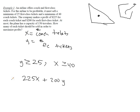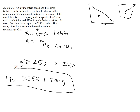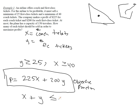We want to maximize that, so this is our objective function — this is what we want to make as big as humanly possible. We have one more constraint: at most, the plane has a capacity of 150 travelers. So the number of first class plus the number of coach has to be less than or equal to 150.